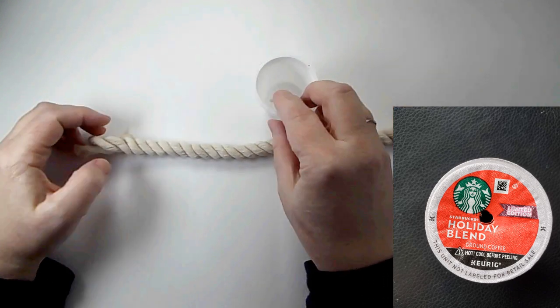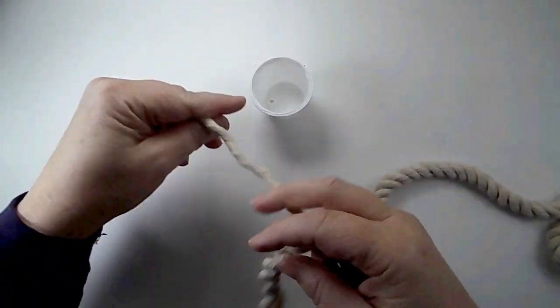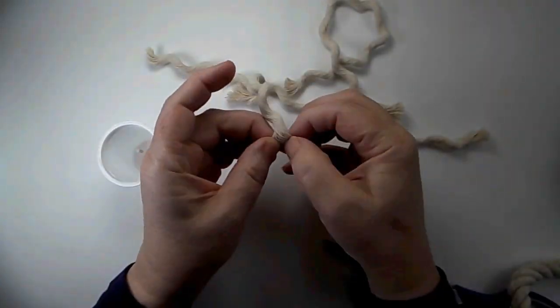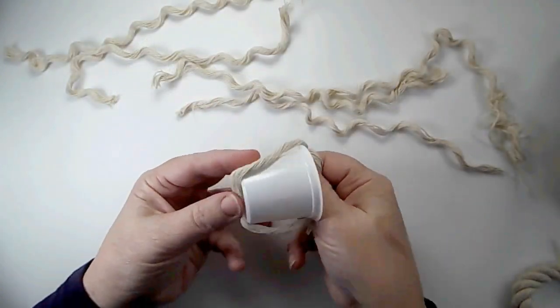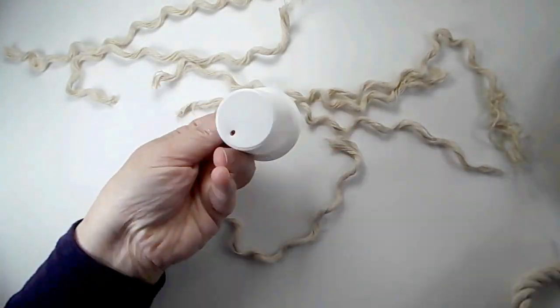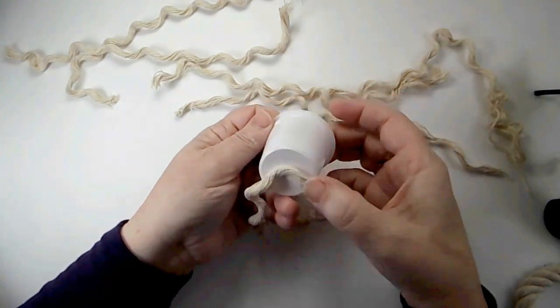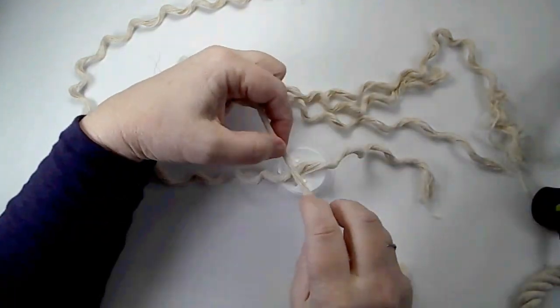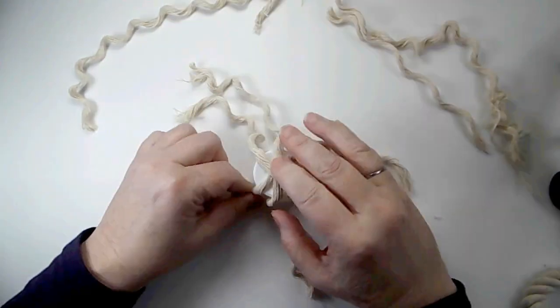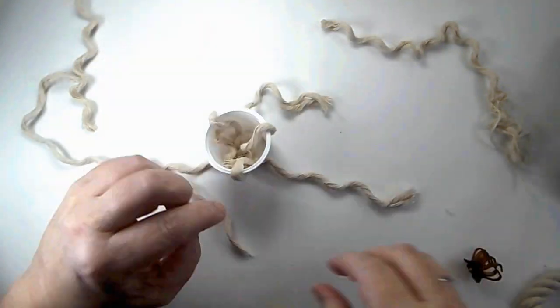I took this white nautical rope and a K-cup, so it's all emptied out. It's been used, so we're reusing, recycling, and all of that. I took apart the nautical rope, and then I split each of those in half also. Now, I'm gluing it within the center, in the center of the bottom of the K-cup. In total, I'll use three of those half strands.